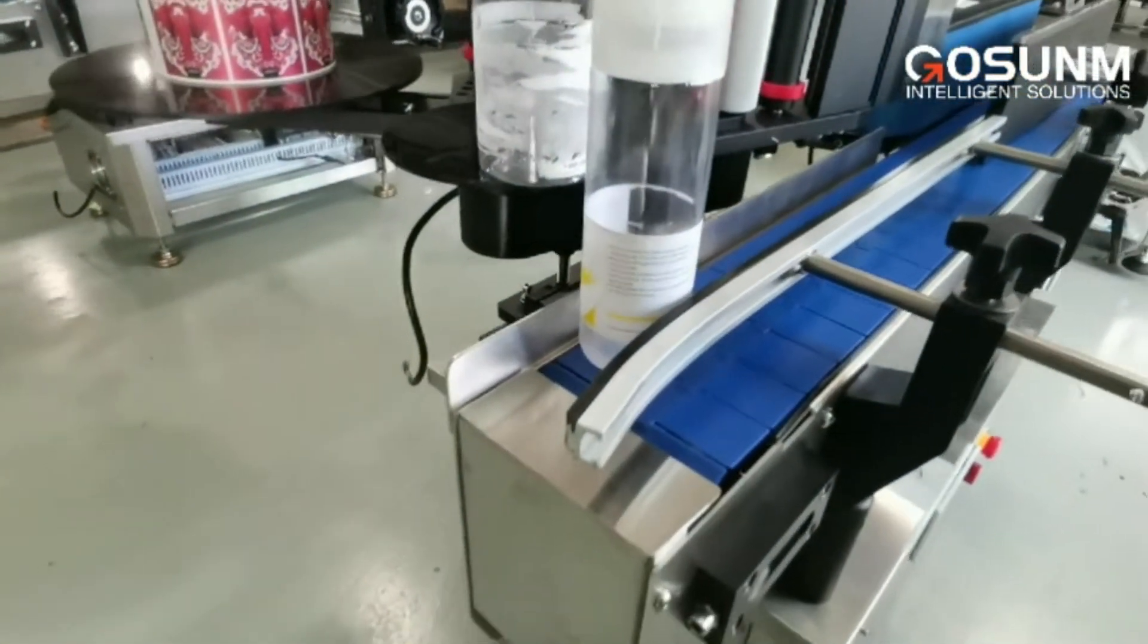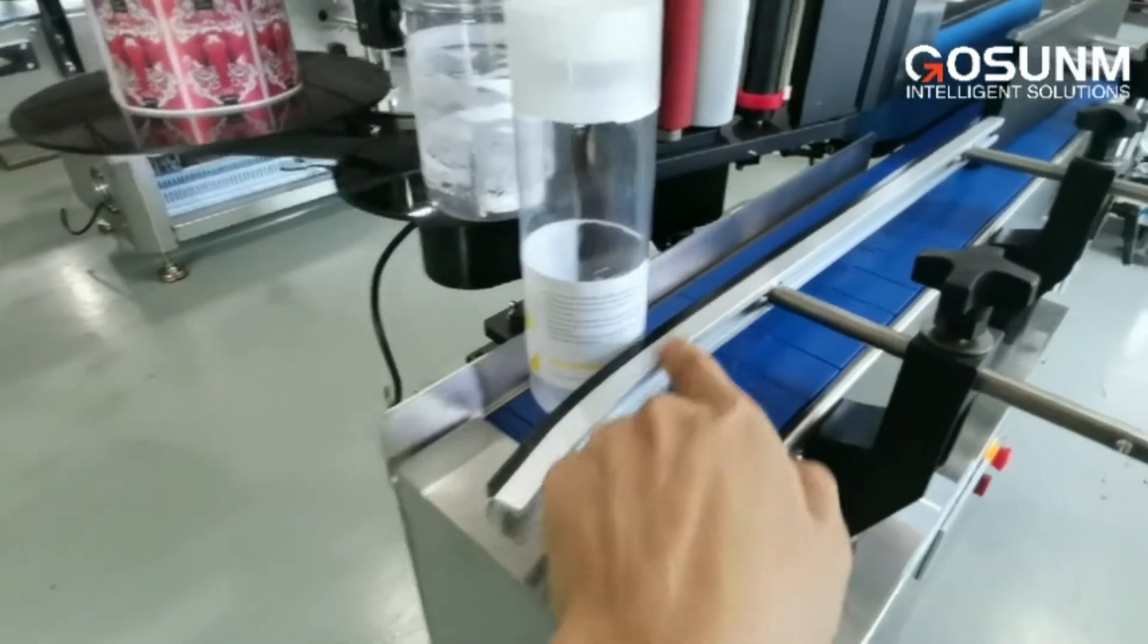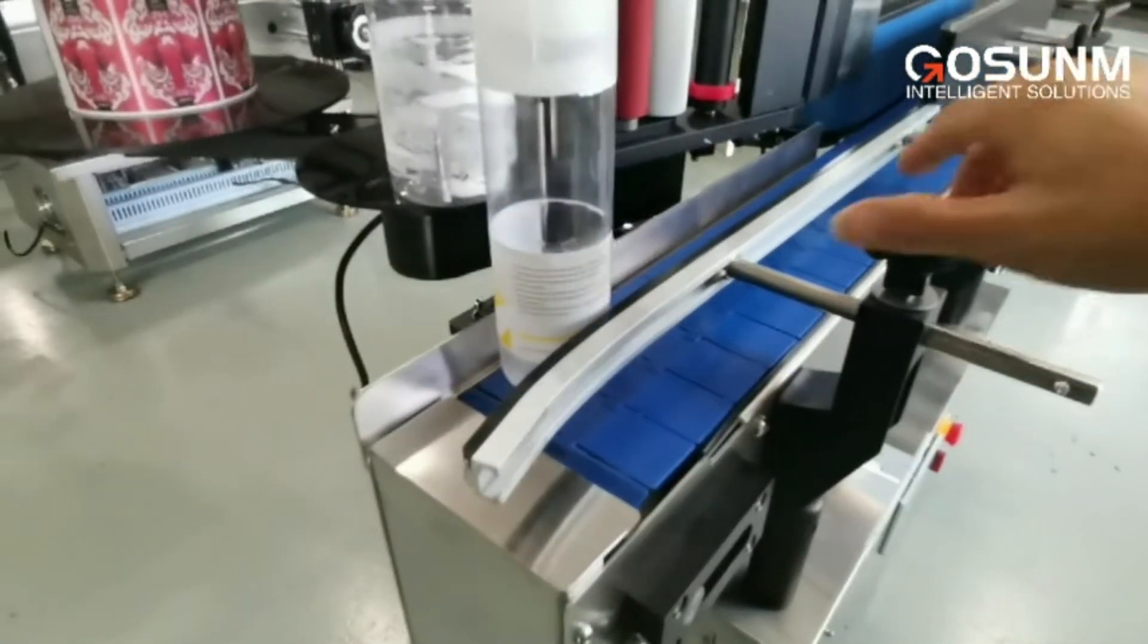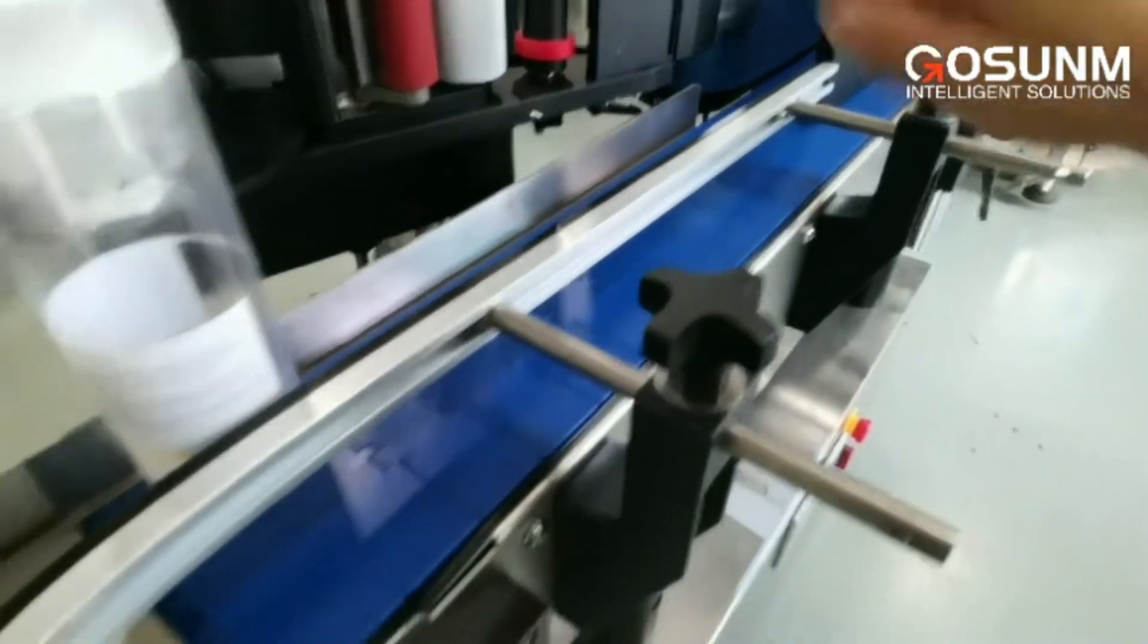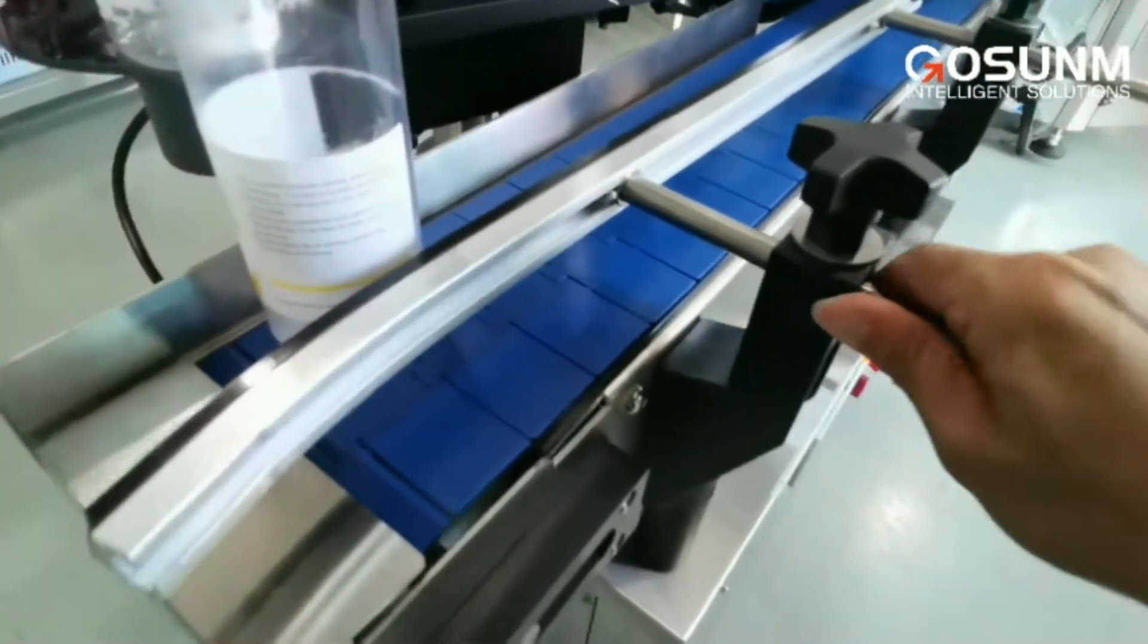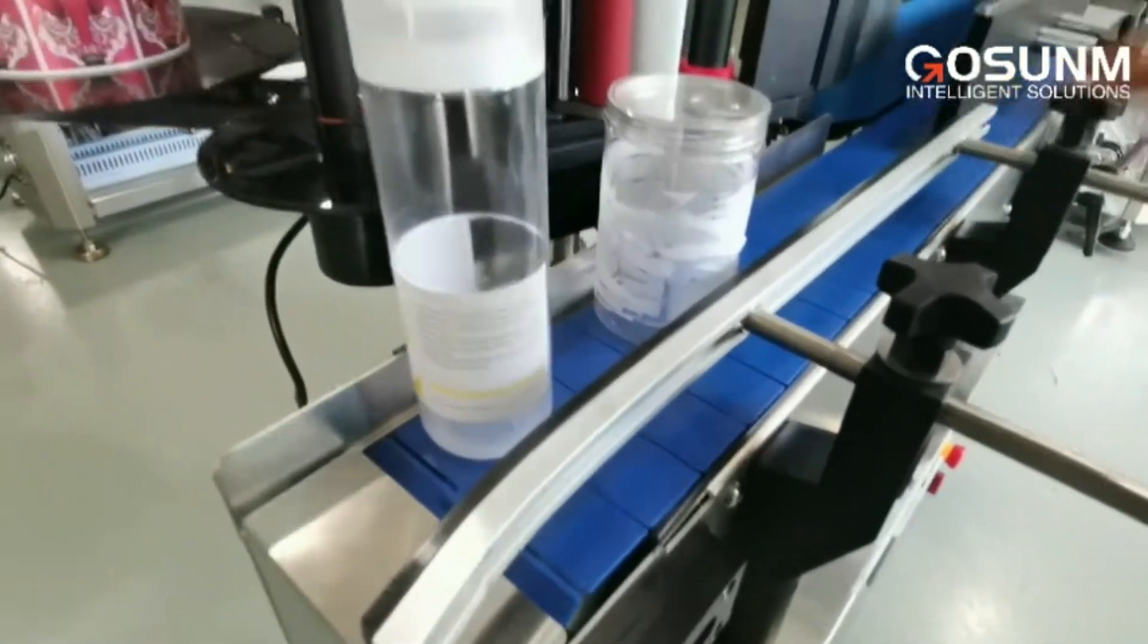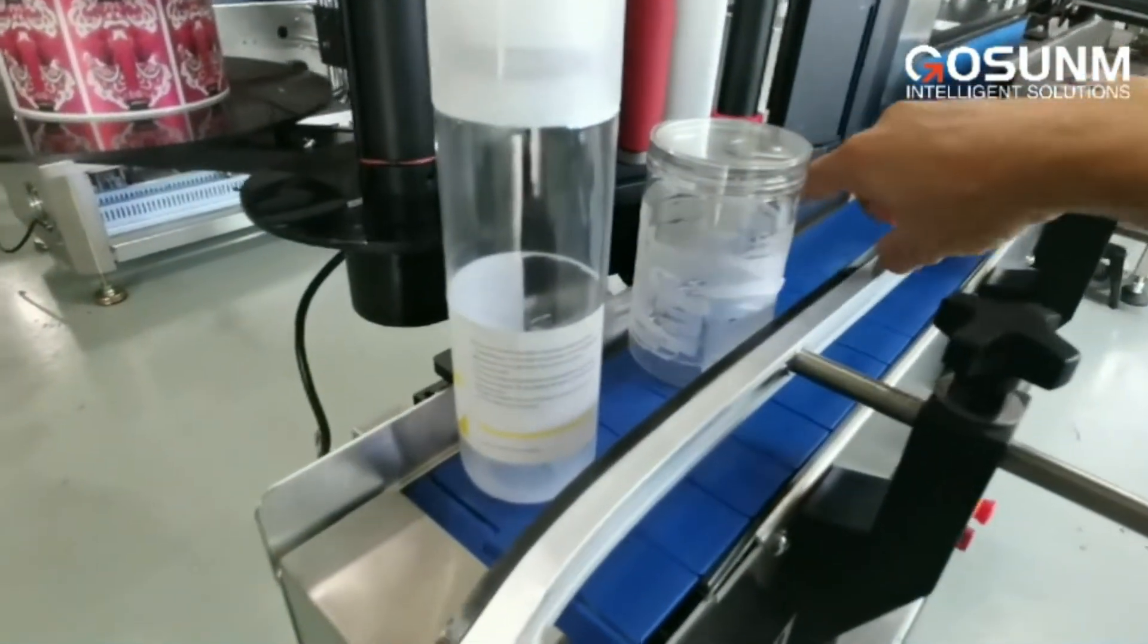We need to adjust this side of fans. Adjust here. Now we just adjust two handles and you can see we can adjust the width. Now this bottle, this big bottle, is suitable for this conveyor.